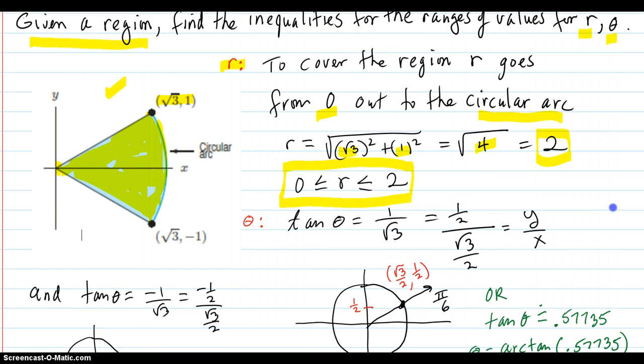So one way to do it, take your point right here. That's xy. So tangent is y over x, which is one over square root of three.